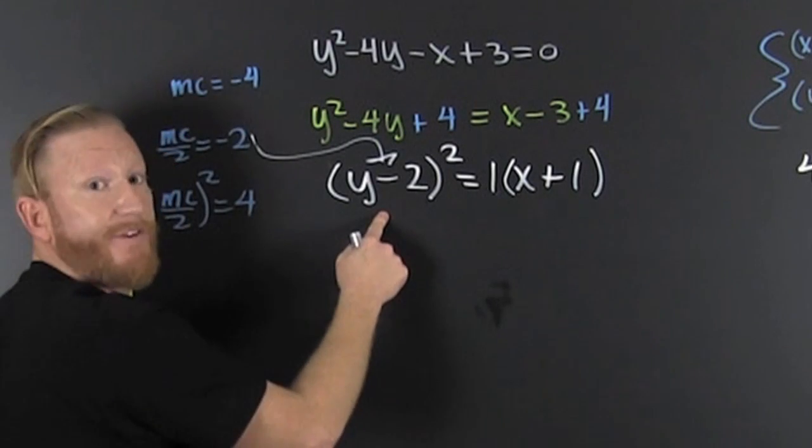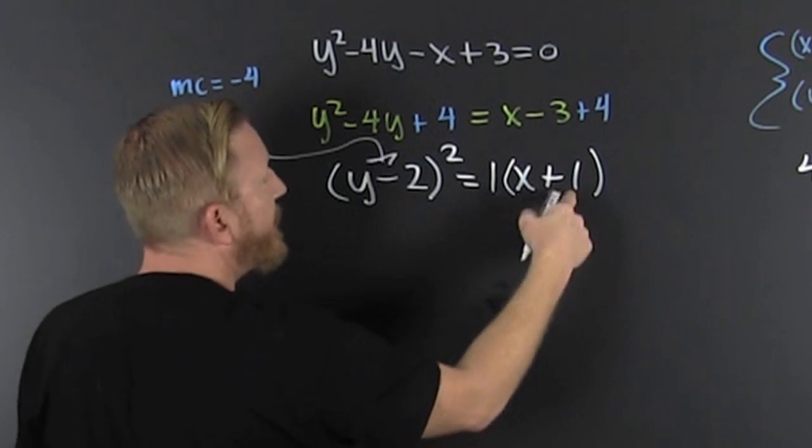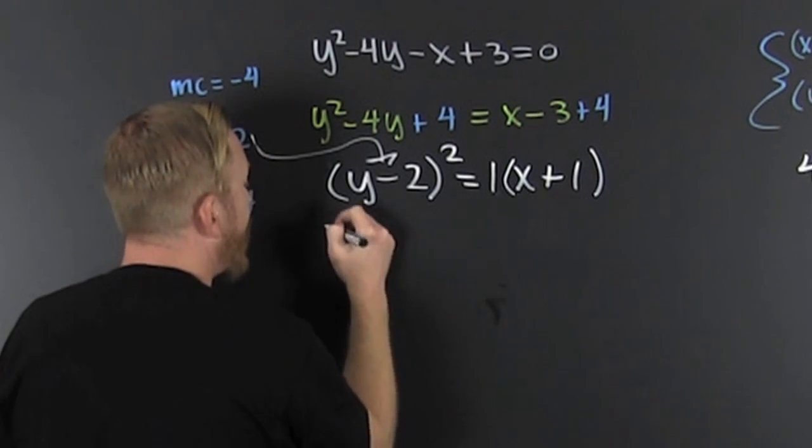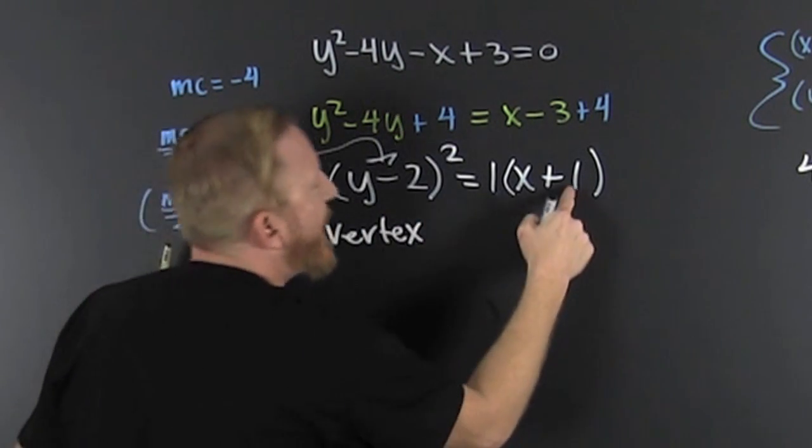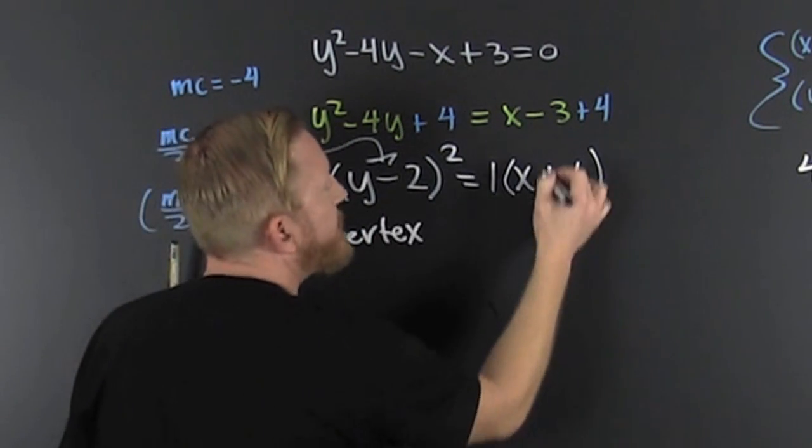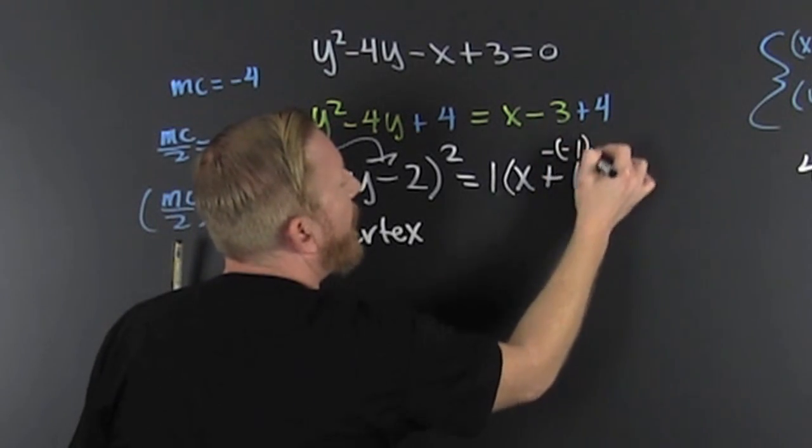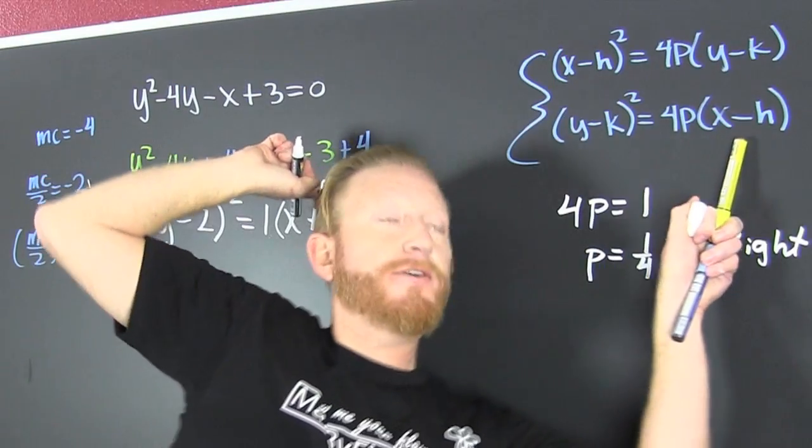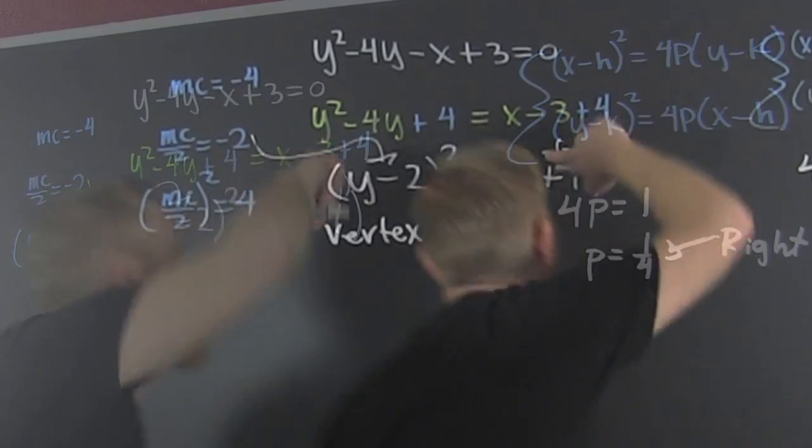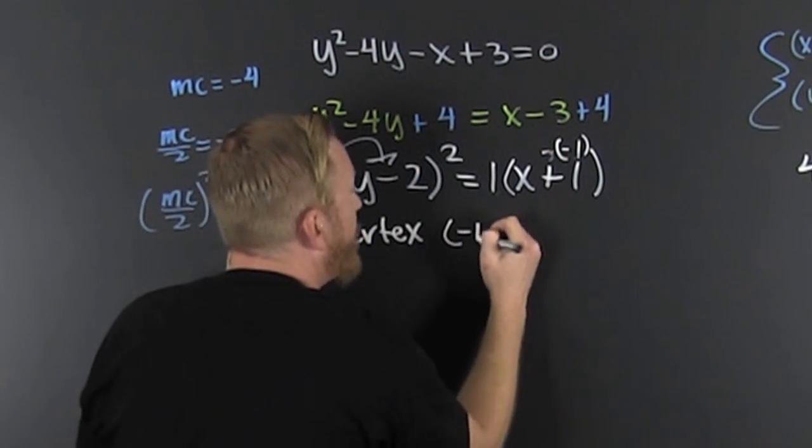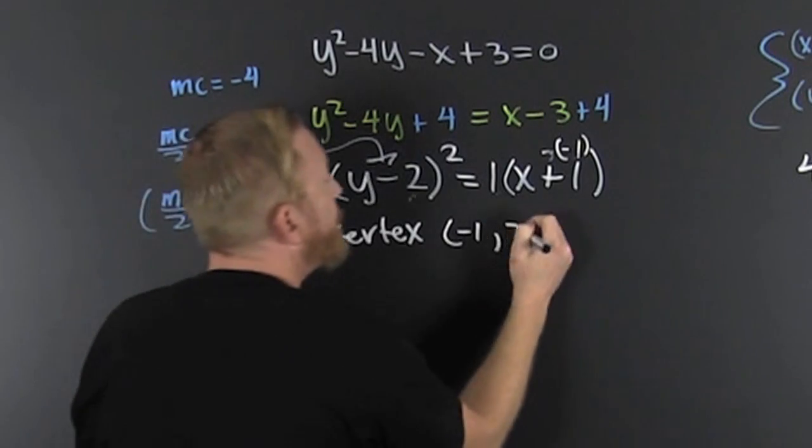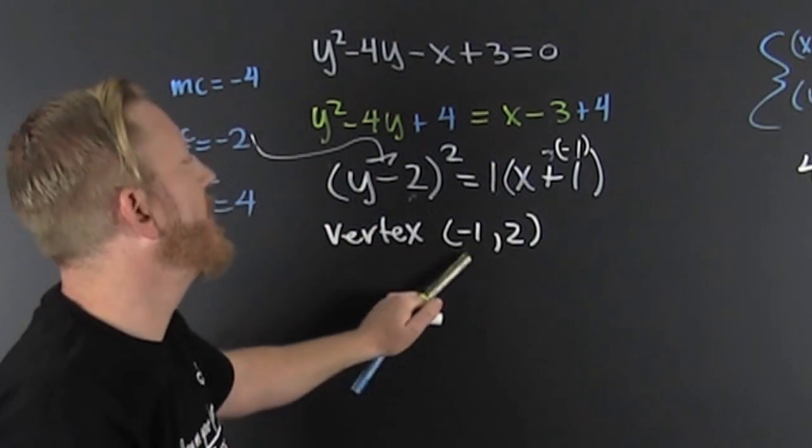So what is my vertex? My vertex is h, k. That's a minus minus 1. Because in the preferred form, it's the minus. That's a minus minus 1. So my vertex is at minus 1 and a 2. So I deduce my vertex is that guy.